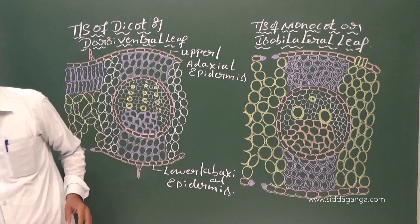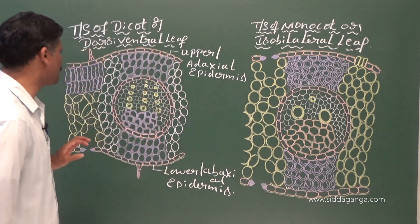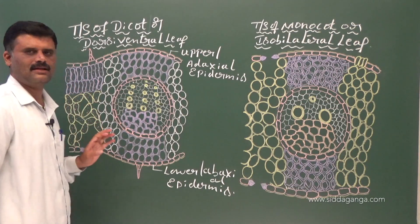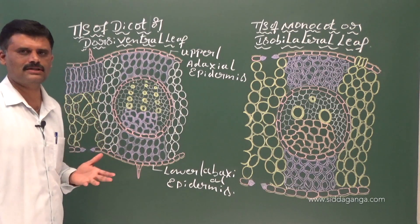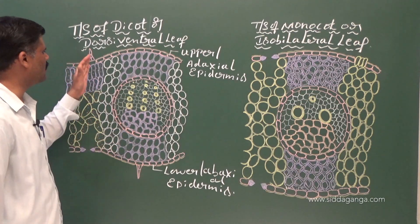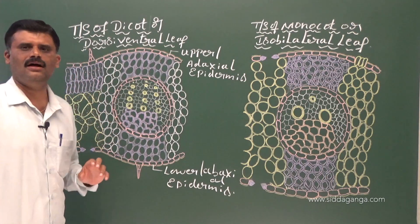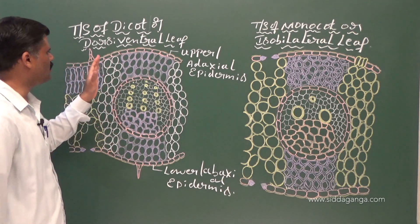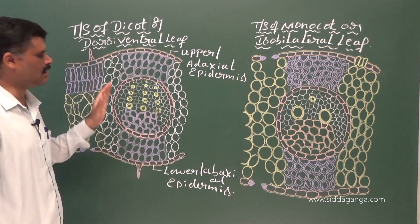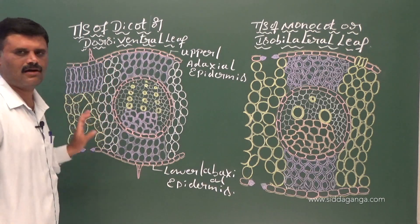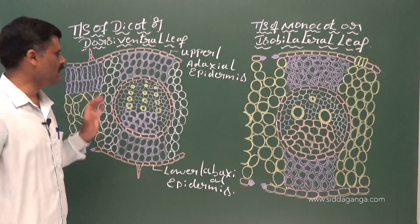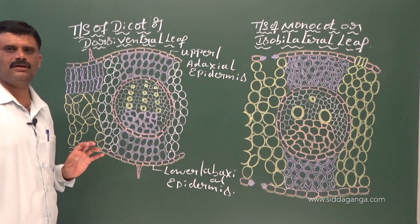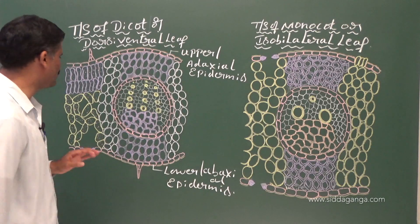In between the adaxial and abaxial surface there is the mesophyll region, or what we call ground tissue, present between the epidermis and vascular bundles. All the tissue except epidermis and vascular bundle is called ground tissue. Here the ground tissue is called the mesophyll region.